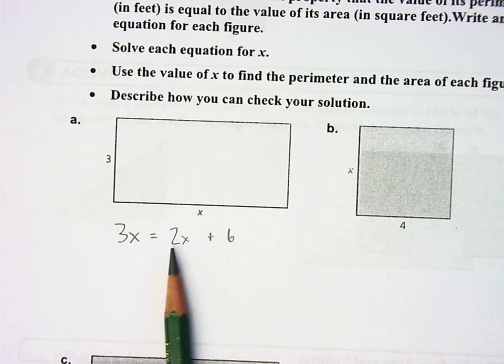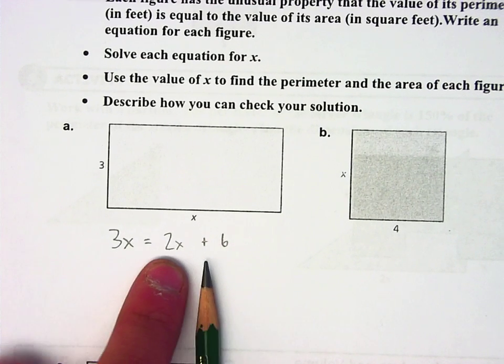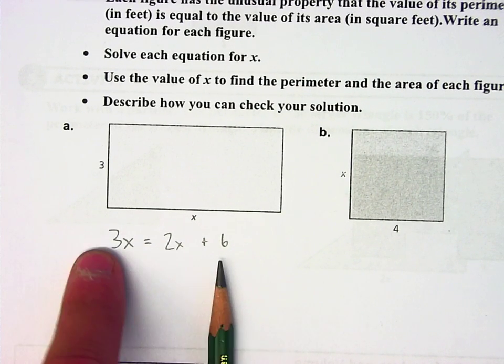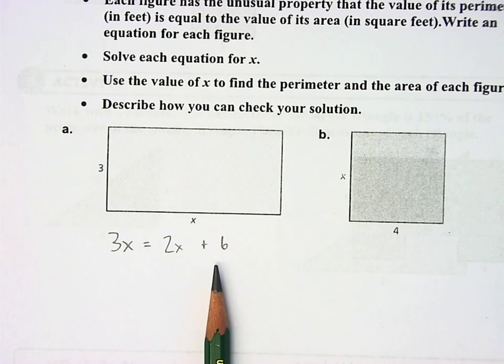Okay, this problem is different from other problems that we've worked on because there's a variable on both sides of the equation. That's the only difference. Now, I don't like that there's a variable on both sides of the equation, so I'm going to change it.